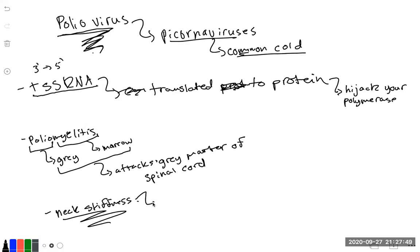Polio comes from usually drinking contaminated water. So polio is a picornavirus and it replicates in the motor neurons of the spinal cord.